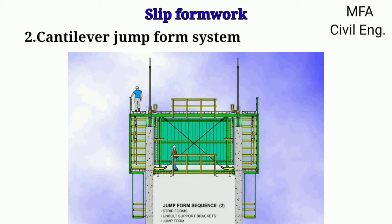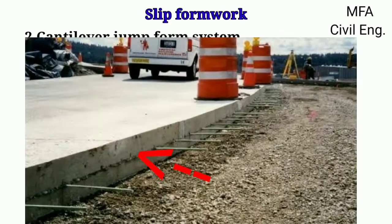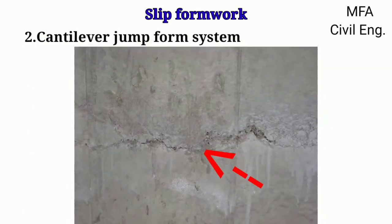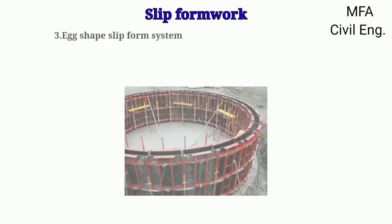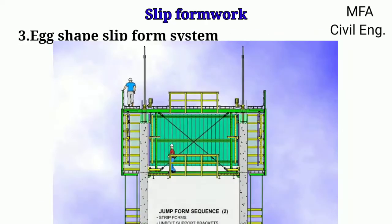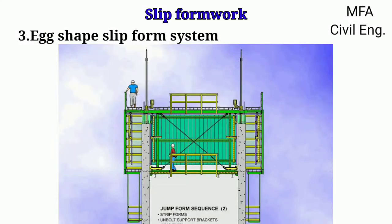A great advantage of slip form construction is that it provides a rigid cast structure which is free from ties and cold joints. The egg-shaped slip form system is based on the jump form principle and can be adapted to any geometrical shape.